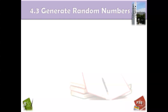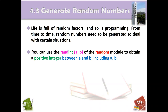This is chapter 4.3: Generate Random Numbers. Our life is full of random factors, and so is programming. From time to time, random numbers need to be generated to deal with certain situations. For example, players play a game where there is a random number nobody knows — like a guessing game with a mystery number.